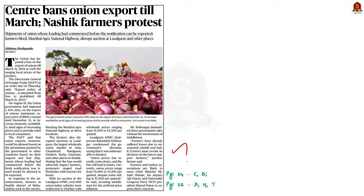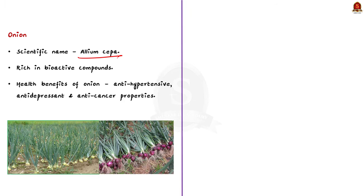Look at this article. Recently, the central government imposed a ban on the export of onions till March 31, 2024, to curb the increasing prices of onion in the domestic market. However, the government said onion exports would be allowed based on permissions granted by the government. In this discussion, let us understand some important points about the onion crop. The scientific name of onion is Allium cepa. Onion is an important vegetable used as a food ingredient worldwide, rich in bioactive compounds with potential anti-hypertensive, anti-depressant, and anti-cancer properties.